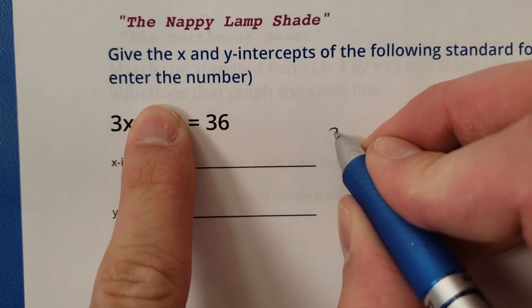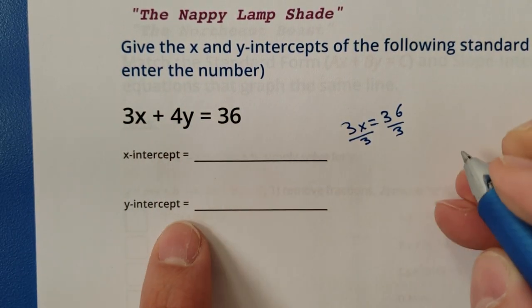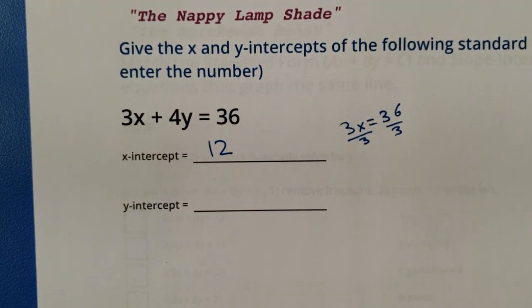So let's solve 3x equals 36. Divide by 3, divide by 3. X is going to equal 12. There we go. The x-intercept is 12. That's it.